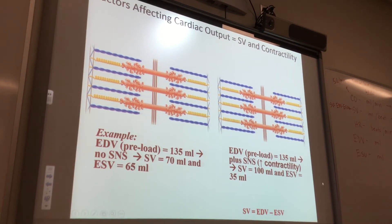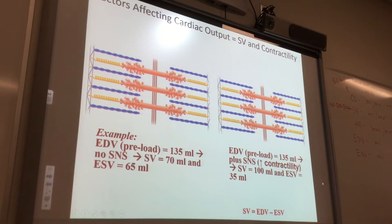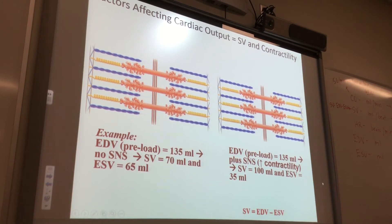So in heart one, the stroke volume is going to be 70 mils. In heart two, with sympathetic nervous system activation, more calcium, and higher contractility, the stroke volume is going to be 100 mils. After contraction, you're going to have an end-systolic volume. It's going to be higher in the heart without sympathetic nervous system and lower in the heart that had sympathetic innervation, because you pumped more out — you had a higher stroke volume.